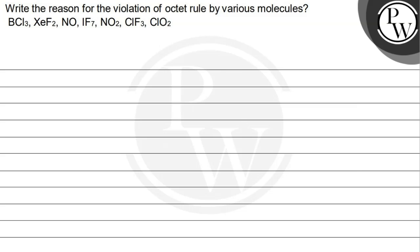Hello, Bacho. Let's read the question. The question says: write the reason for the violation of octet rule by various molecules — BCl3, XeF2, NF7, NO2, ClF3, ClO2.